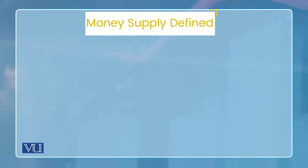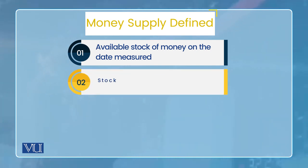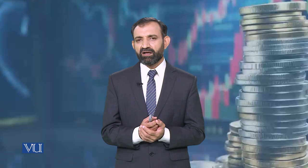Toh abhi hum start karte hain ke money supply process kya hota hai. Uske liye bhi, again, main basic se build karunga apna case. Ke sab se pehle, money supply ko define karein. Money supply se muraad yeh hai ki available stock of money on the date measured. Yeh maine pehle bhi aapko ek lecture mein bataya tha ke money is a stock variable. It is not measured for a specific time period, rather it is measured on a particular date. Toh isliye iski definition mein clear hoga ke yeh jis date ko measure ho raha hai, us date pe jo available stock hai money ka aapki economy mein, woh aapka money supply kehlata hai.